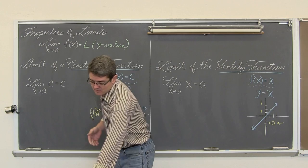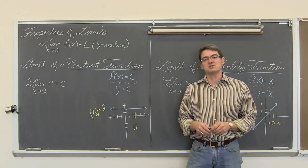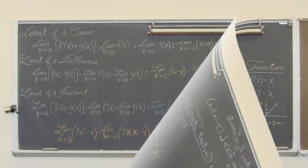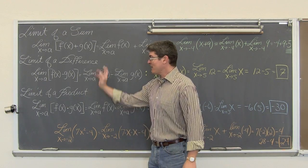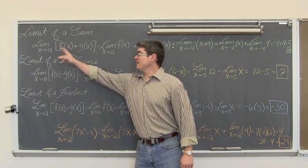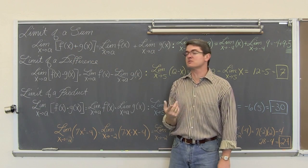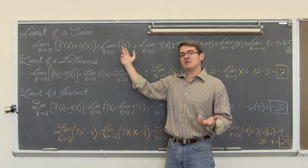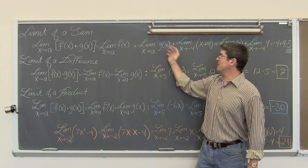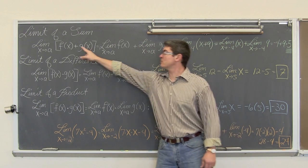These two basic properties are going to help us work through all the other basic properties in the next ten minutes. We have three properties here. First, the limit of a sum: the limit as x approaches a of f(x) plus g(x) is equal to the limit as x approaches a of f(x) plus the limit as x approaches a of g(x). Basically, we take the limit of each of those terms and then add them.